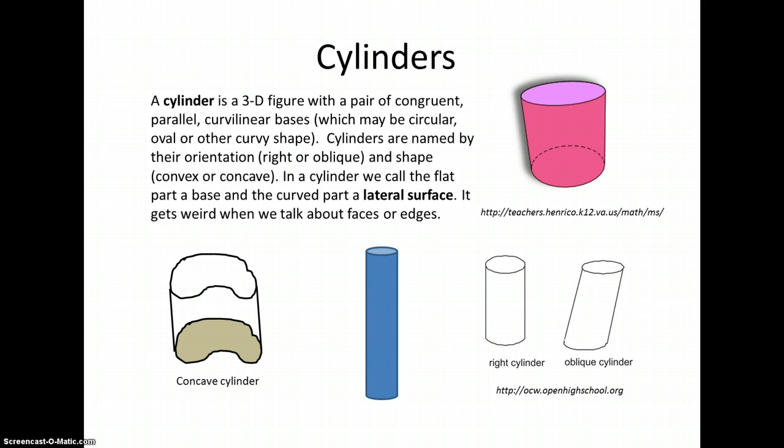It gets really weird when we talk about faces or edges of cylinders, as up to this point, we've considered a face to be a polygonal shape of a polyhedron, and a vertex to be the intersection of two edges of a polyhedron. This doesn't make sense for a cylinder, and so often we just call them bases and lateral surface to not get them confused with how we've been using vertex, faces, and edges on polyhedron.